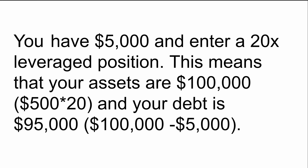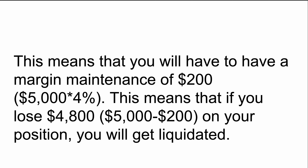Now let's use another example: you have $5,000 and you enter a 20x leveraged position. This means you now have assets worth $100,000, which is $5,000 times 20, and your debt is $95,000, which is the assets minus the amount you actually put in. So this means you will have to have a margin maintenance of at least $200, which is $5,000 times the 4% according to that table. This means that if you lose $4,800 on your position — the $5,000 initially put in minus the margin maintenance of $200 — then you're going to get liquidated.